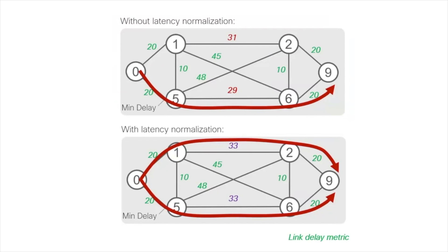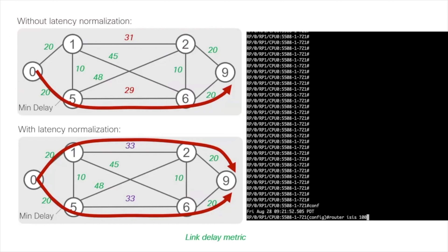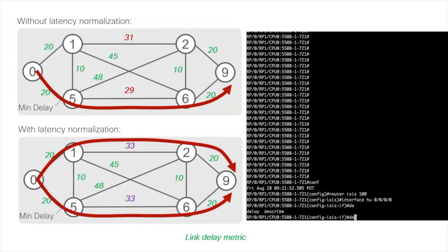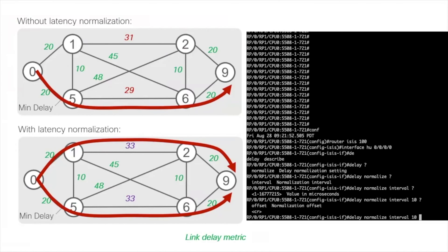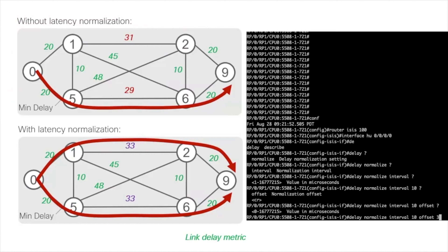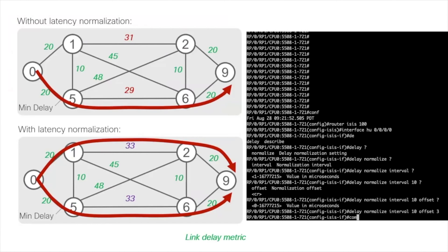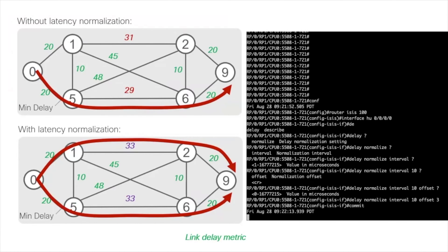To address this, we configure what we call latency normalization. By normalizing the delay on links — for example the link between one and two, and the link between five and six — the normalized delay in this case, based on the configuration shown, will be the value of 33. Therefore router zero will be able to have an ECMP-reachable path minimizing delay from zero to nine.